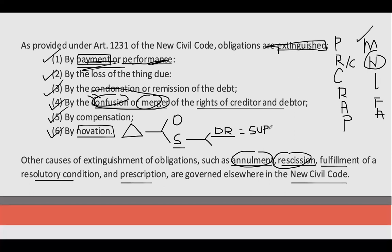In substitution, there can either be Delegasyon or Expromision. Pag sinabing Delegasyon, it is the original debtor who delegated — who offered to the creditor a new debtor. Kagaya po kanina, si Pedro ang nag-offer kay Juan de la Cruz na si Carlo ang magbabayad. So dinidelegate na niya kay Carlo yung pagbabayad. Si Carlo nag-agree, si creditor Juan de la Cruz also agreed, 'Sige na nga, siya na lang ang singilin ko ha.'